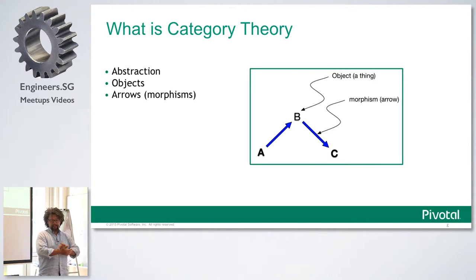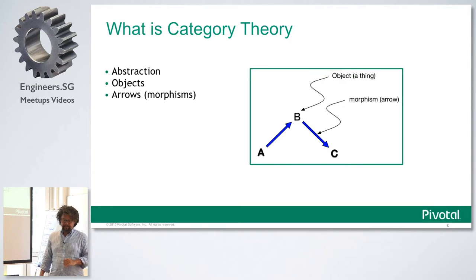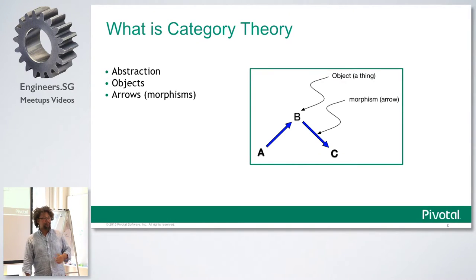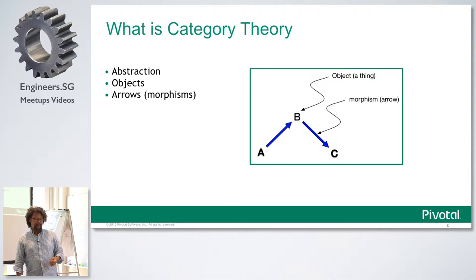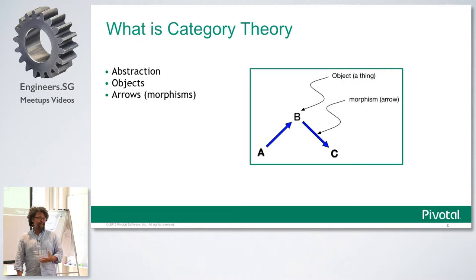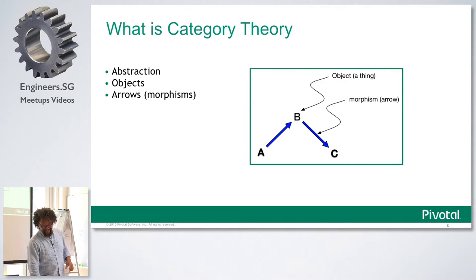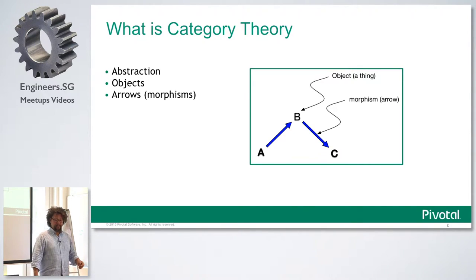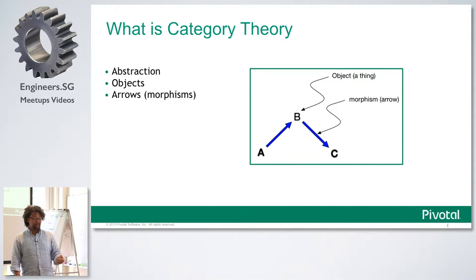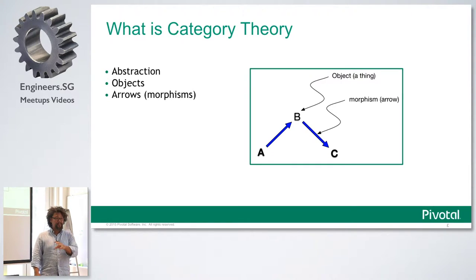Objects can be anything — they are the A, B, and C in this little diagram. The arrows are called morphisms by category theorists. We can call them arrows. I will probably keep calling them morphisms, because it makes me sound a lot more intelligent about this stuff than I actually am. The blue bits are morphisms — they are directed lines between the objects.